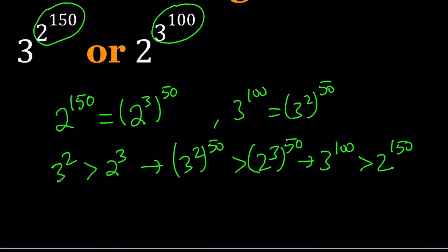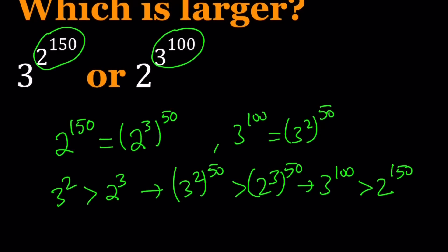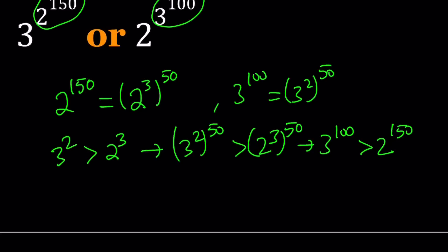And we were kind of expecting that, right? If 2 to the power 150 were larger, then the problem would be done right there. Okay, so 3 to the power 100 is greater than 2 to the power 150.